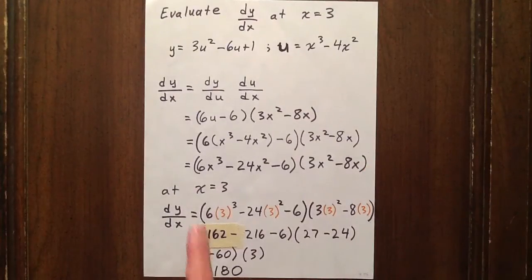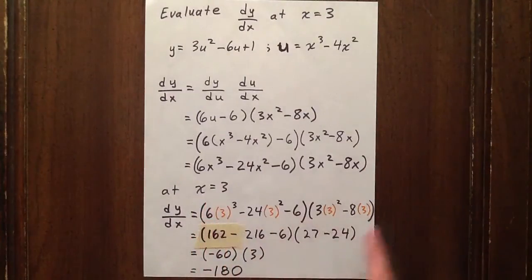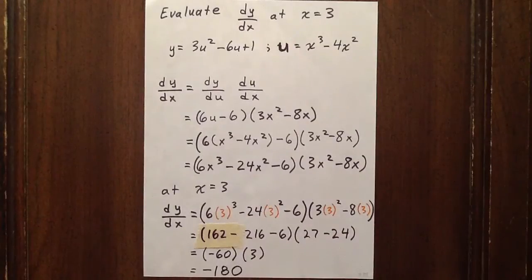Now, we were asked to evaluate when x equals 3, so we simply substitute an x value of 3 in, use our order of operations, and we get a value for the derivative of negative 180.